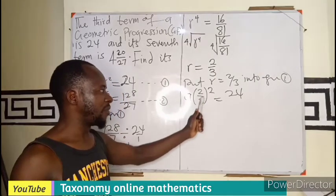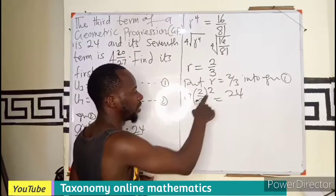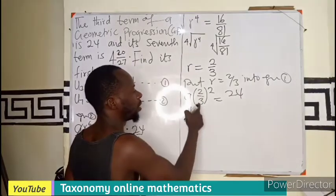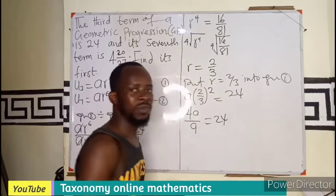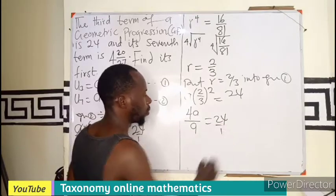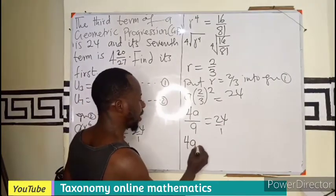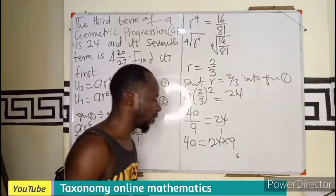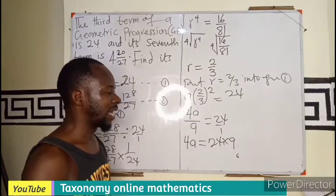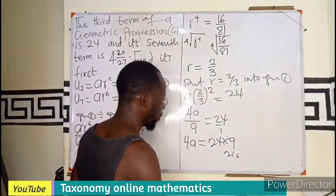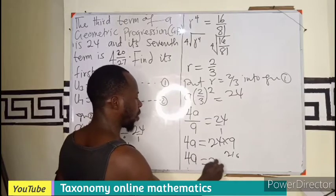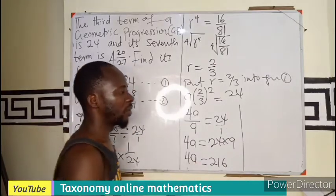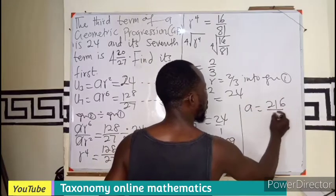Under indices, if I have a fraction squared, each of the terms takes the square. So it becomes 2² over 3². This is multiplied to become 4a over 9 equals to 24. We now have a fraction. We cross multiply. So 4a equals to 24 times 9. And if you multiply that, we have 216. So I'll be having 4a equals to 216.